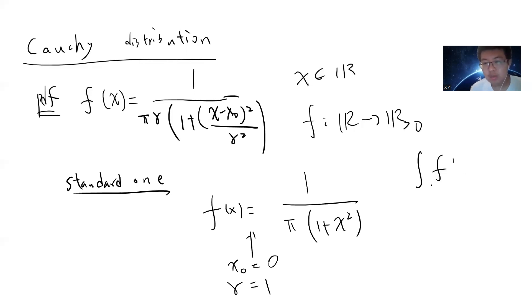One can easily check that this is the probability density function because it's all positive and then its integral is one, because this guy is π. This is just very simple complex integration. The easy way to prove it is just make x equal to tan(θ) and you get dx equals sec²(θ)dθ.